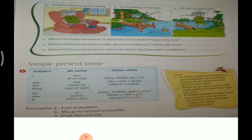Simple present tense — also called sadha vartamad kaal (simple present tense). Today we will be talking about this. Look, there is a picture given here. 'GT goes fishing every Friday.' GT always goes fishing every day — every Friday he goes fishing. This is called simple present tense.